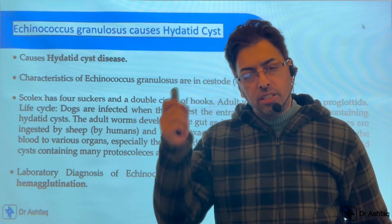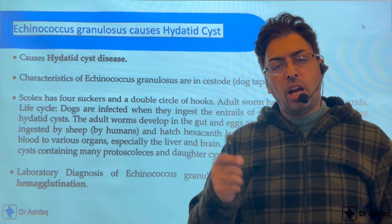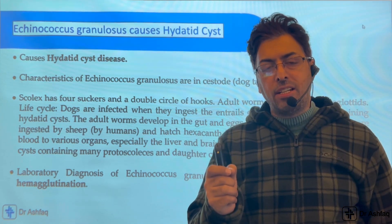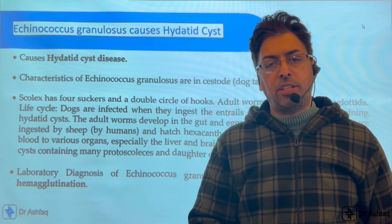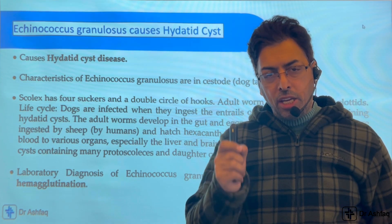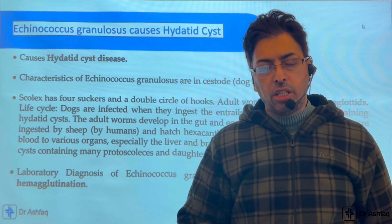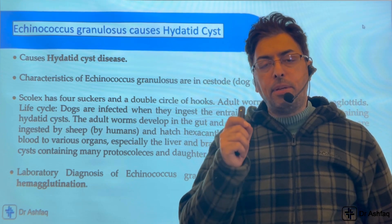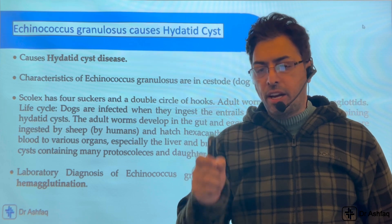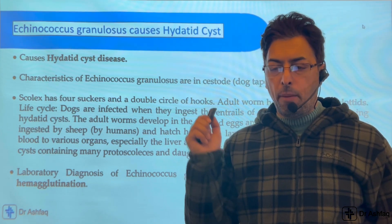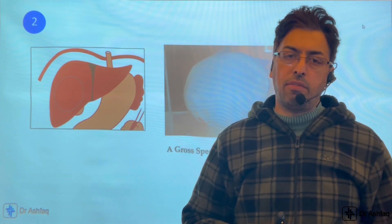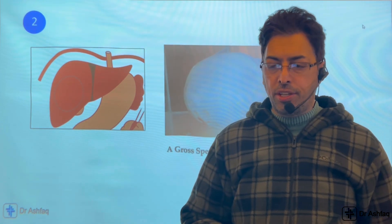There are certain high-level questions asked for PG and NEET SS which I am not discussing here. The primary point is that the liver is most commonly affected, but many organs can be. The lab diagnosis involves indirect tests; the indirect hemagglutination test is one of the important tests for hydatid disease.